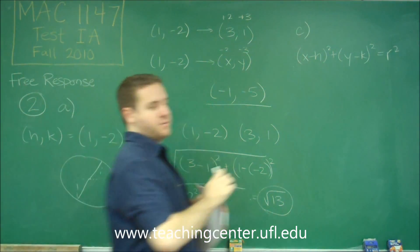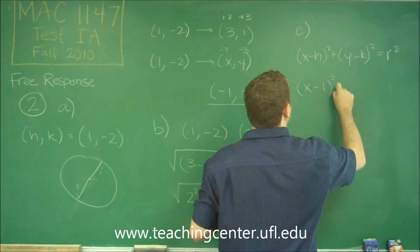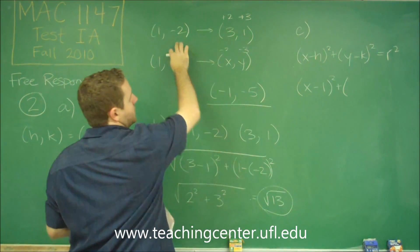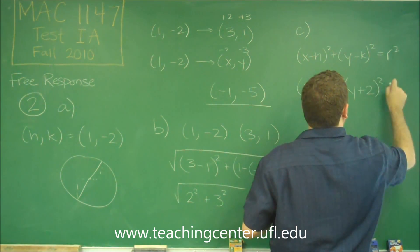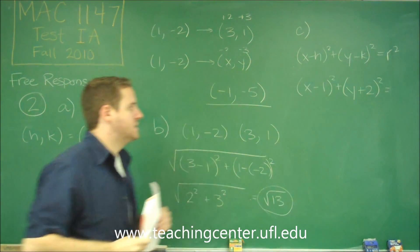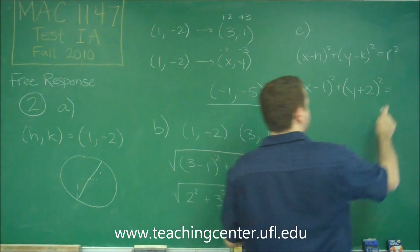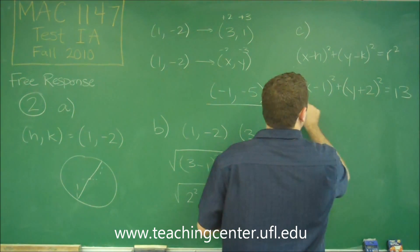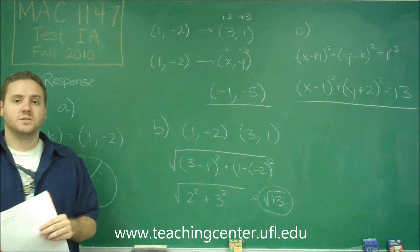So let's plug in our center first, our (h,k). We'll have (x-1)². Since our y coordinate is negative, that will make it (y+2)². And since our radius was the square root of 13, the square root of 13 squared is just 13. So that there would be the general form of our circle.